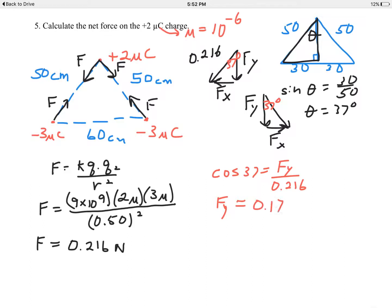So F sub y comes out to be 0.17 newtons rounded off to two sig figs. Therefore, the net force on that top charge is going to be double that because there'll be two of those adding together. The F sub x will cancel out. So the final answer, F net that we're looking for on that top particle, will be 0.34 newtons. Let's say down, or toward the base of the triangle. Down is good enough if you have a diagram.